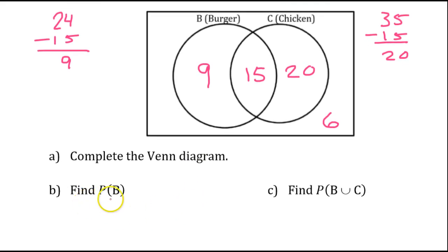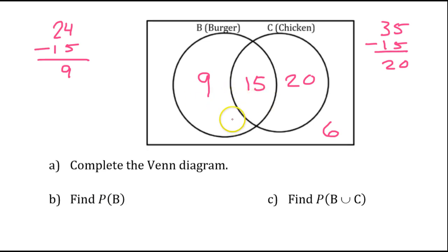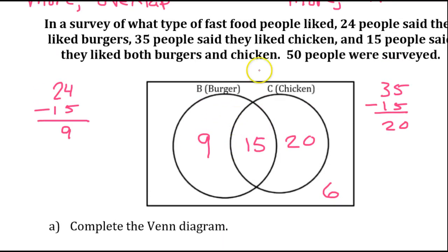So, part A was simply to complete the Venn diagram. Next, we're supposed to find the probability of B. So, B is both of these. And, we already know that 24 people like burgers. So, of course, this makes 24.